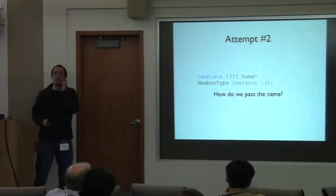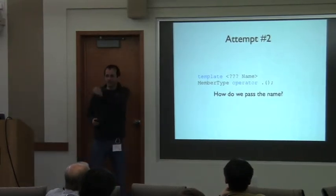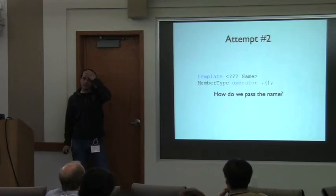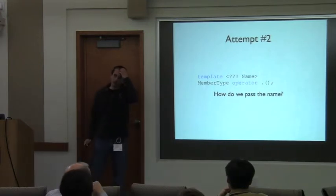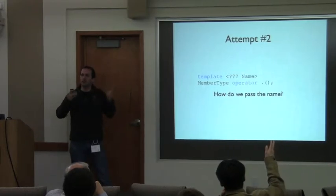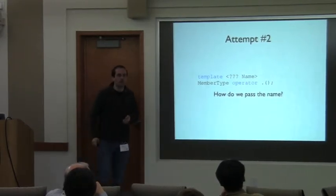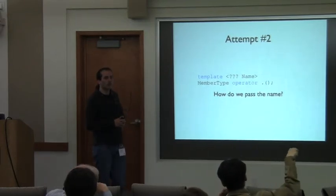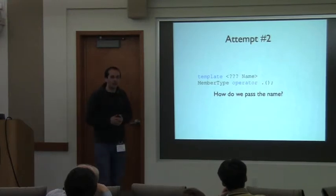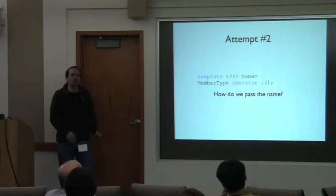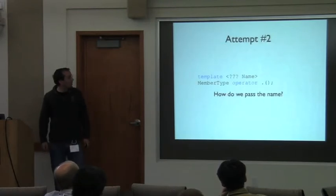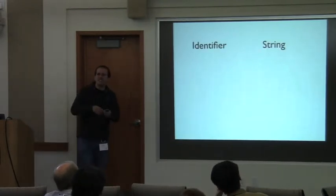What do we put for the type of that template parameter? A variadic argument of char — passing the name as a sort of string — is an option, but annoying to work with. There are basically two ways: pass something that is an identifier, or something that is a string. An identifier is simpler; a string opens a huge can of worms. An identifier is more limited, which is an advantage for understanding.